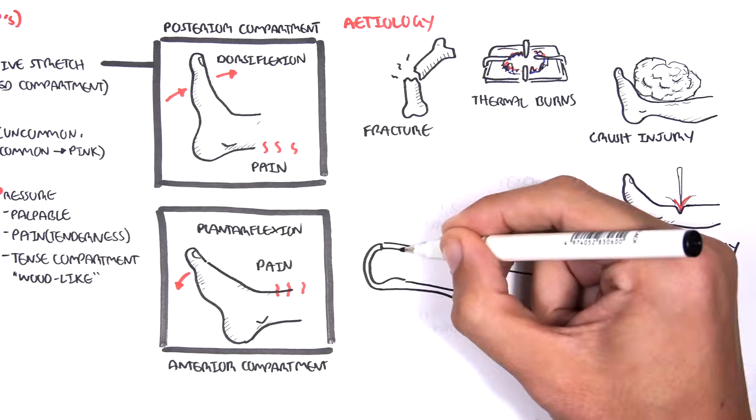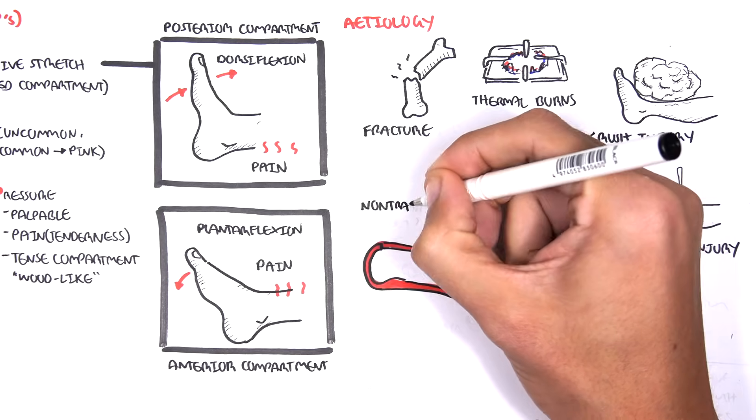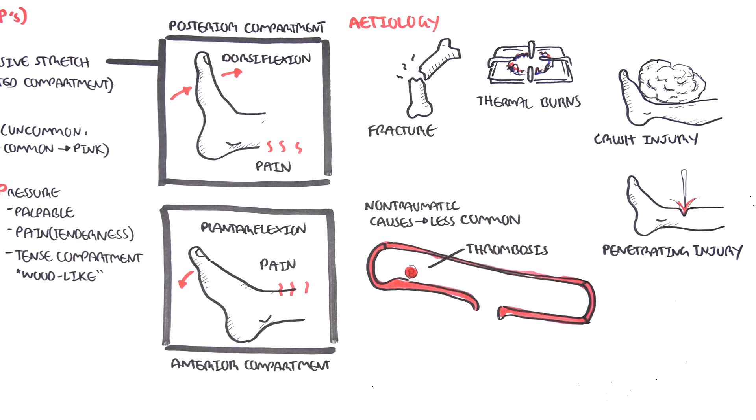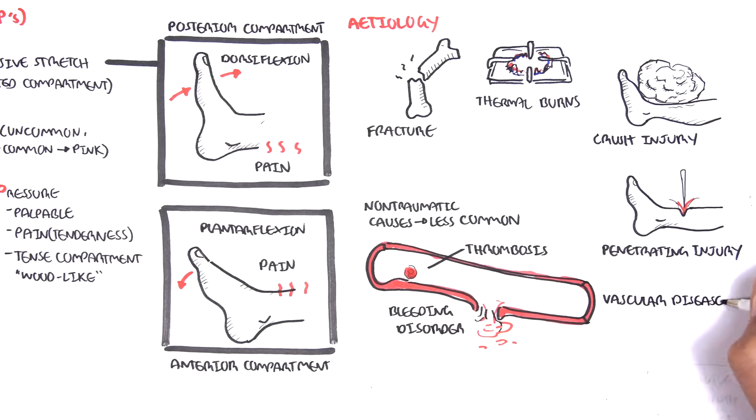Non-traumatic causes of acute compartment syndrome are less common and include thrombosis, bleeding disorders, and vascular disease. Finally, illicit drug use and chronic abuse is also a cause because of the use of tourniquets or injury by needle puncture.